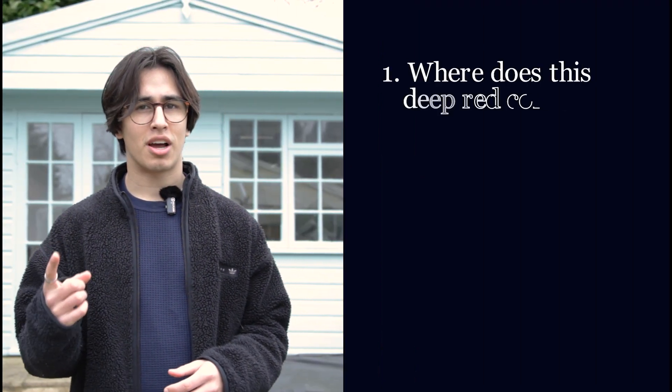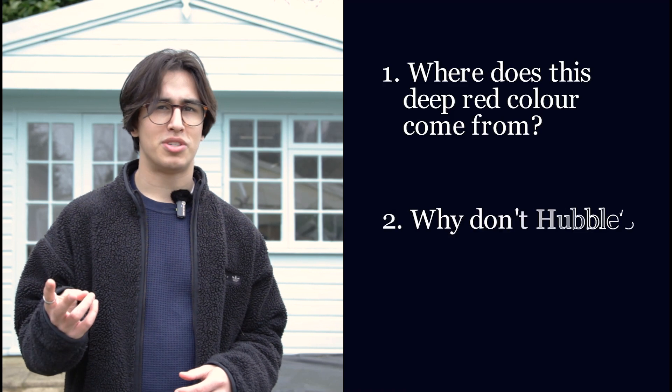In this video we'll tackle two questions. Where does this deep red color come from and why don't Hubble's images look the same? Well the answers lie in a process called electron excitation.